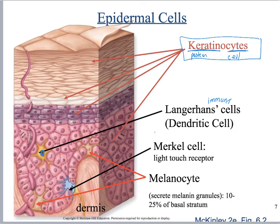Melanocytes are only found in the stratum basale. They have little feelers where they squeeze in between the keratinocytes, and they secrete melanin granules. These melanin granules line up and create a shield over the nucleus of the keratinocytes, protecting their DNA from UV radiation — this is basically your natural sunscreen.